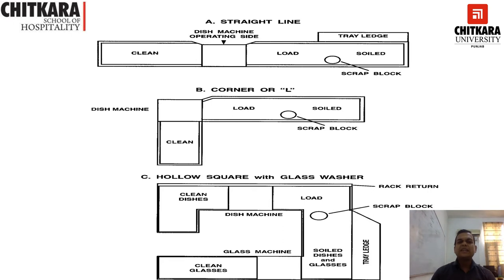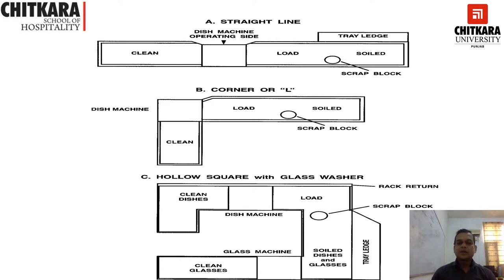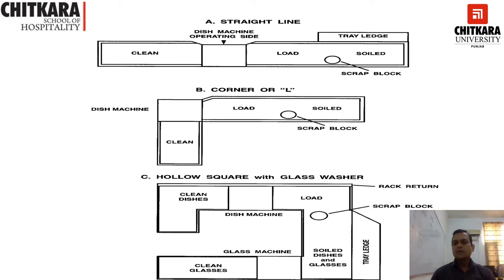The second layout is the corner or L-shape, which is similar to the straight line but has an L-formation where the clean equipment is collected at the disperser. The third layout is the hollow square or glass washer setup, where soiled equipment is collected and loaded, with a separate block for glasses and other equipment such as crockery. So the three types of disperser layouts are: straight line, corner or L-shape, and hollow square with glass washer.